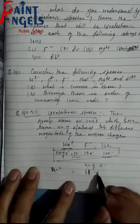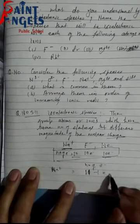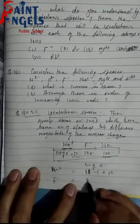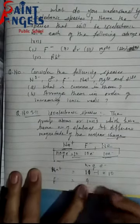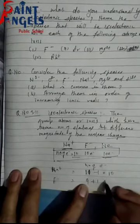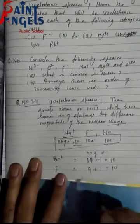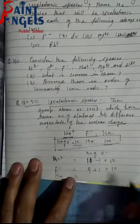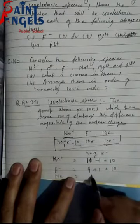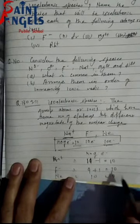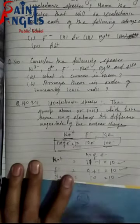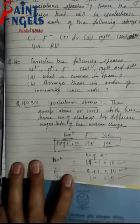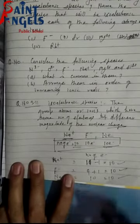Na+ पर 1 plus charge है तो इसका 1 electron minus कर दो — 10 बचता है। F minus का atomic number 9 है, negative charge add करो तो 10 electrons। Neon एक neutral atom है, atomic number वही number of electrons होगा — तो 10 है। तीनों का electron number same है, लेकिन proton (nuclear charge) different है — इसलिए ये तीनों isoelectronic species हैं।